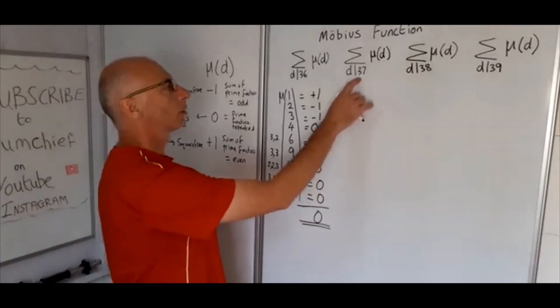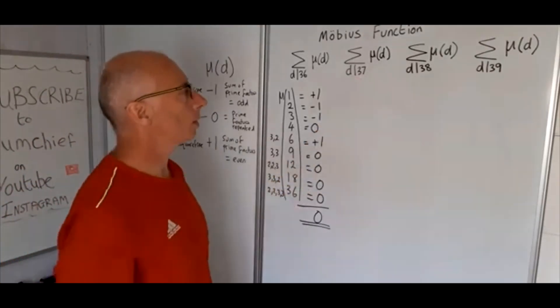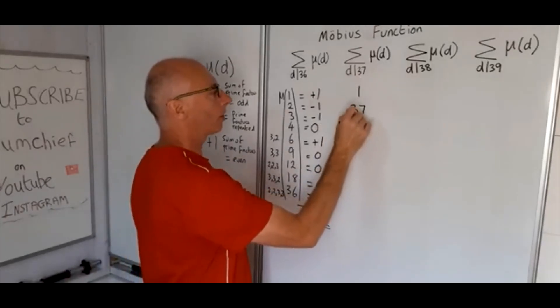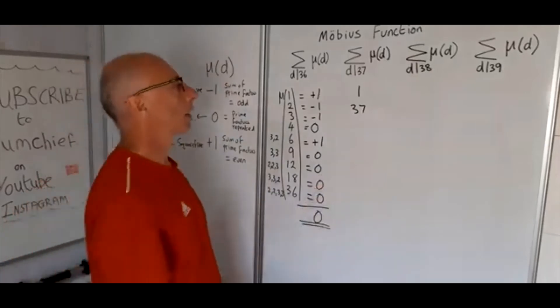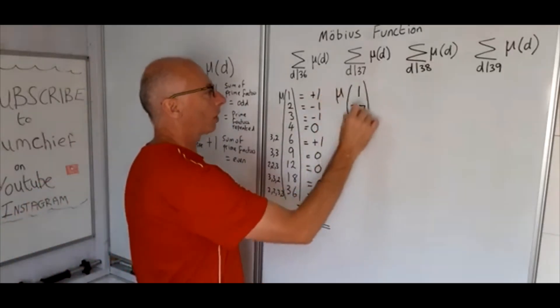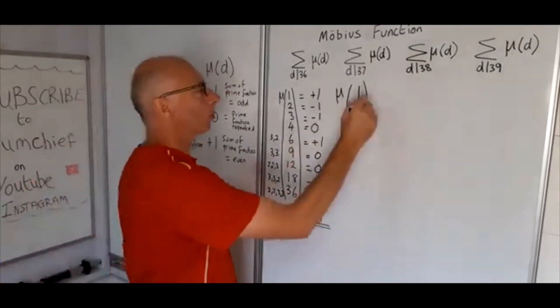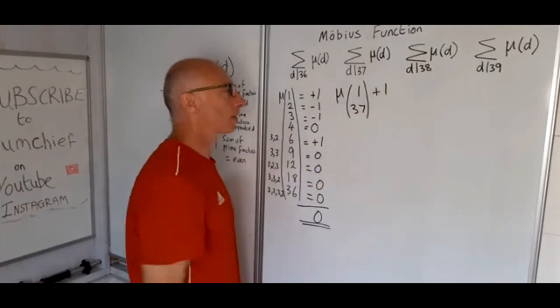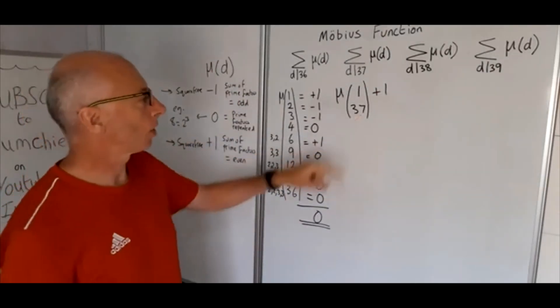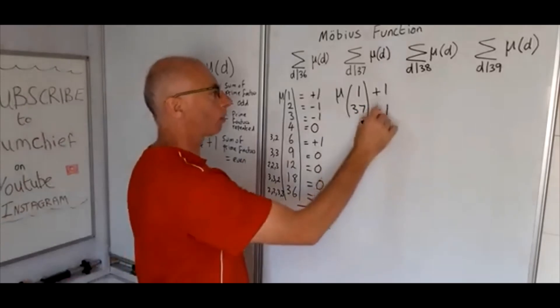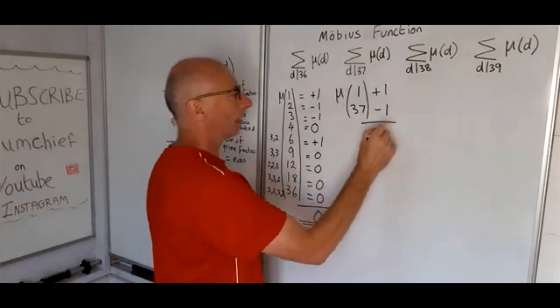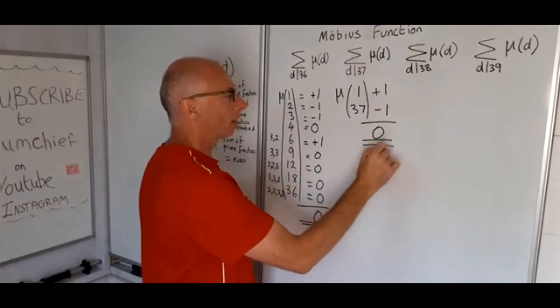Okay, move on to 37. So the divisors of 37 are 1 and 37 itself as 37 is a prime number. So now we take the Möbius function of each of these: 1 we get plus 1, and then 37 that's minus 1 because it's only 37 there. Okay, sum them all up again we get 0.